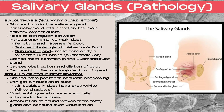The next salivary gland pathology is sialolithiasis. This is when one or more stones form in the salivary gland parenchymal ducts or within one of the main salivary export ducts. It's important to distinguish between an intraparenchymal duct stone versus a main duct stone, as the treatments can potentially be different. In the parotid gland, Stenson's duct is the main export duct. In the submandibular gland, Wharton's duct is the primary export duct. Salivary gland stones most commonly form in the submandibular glands, and these stones cause obstruction and dilation of the duct, which can lead to inflammation and infection.